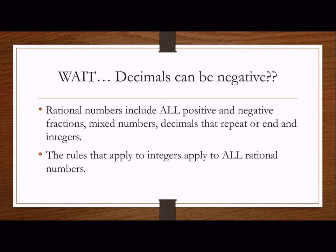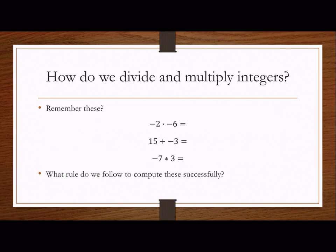Decimals can be fractions? Well, yes — all rational numbers include all positive and negative. So all the rules that apply to integers also apply to all rational numbers. So from the previous lesson, how do we divide and multiply integers?